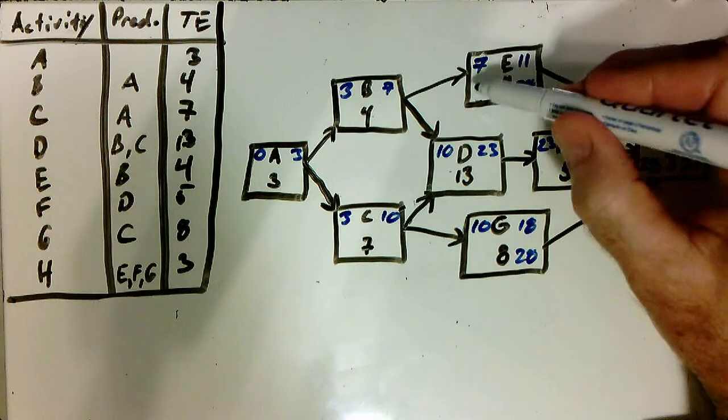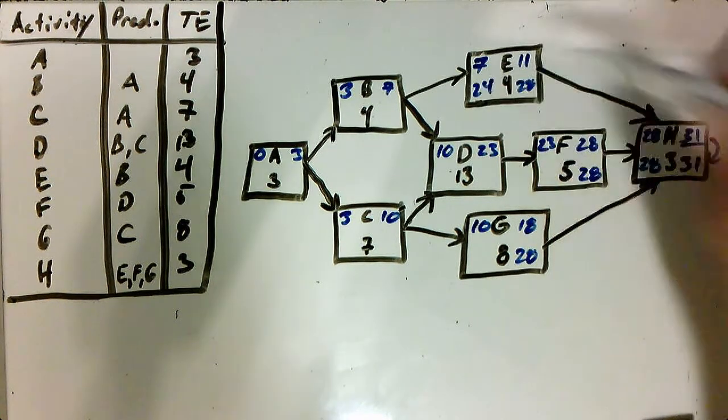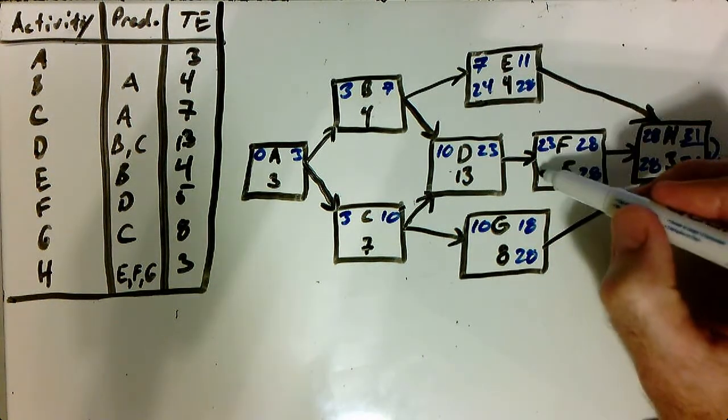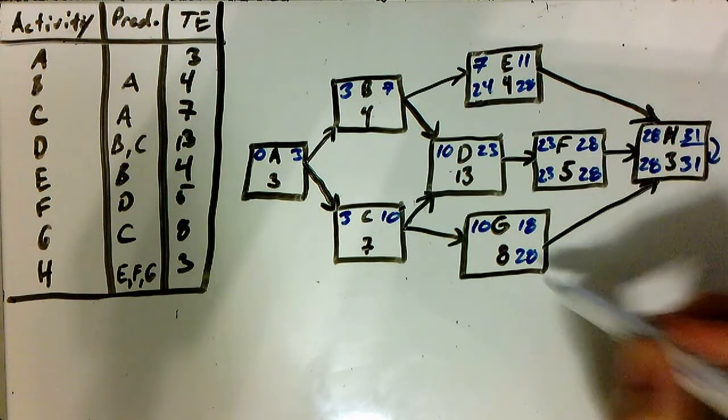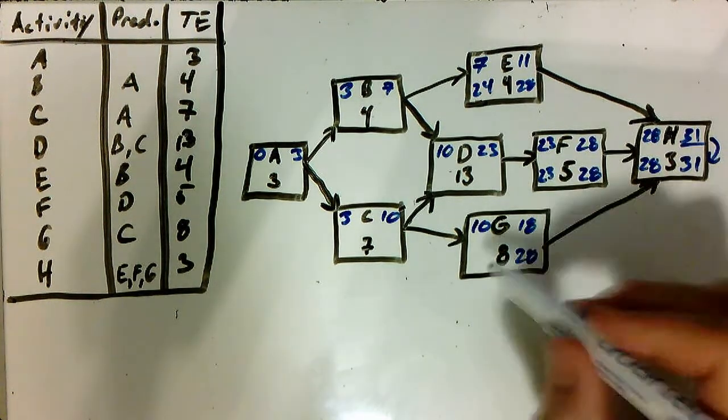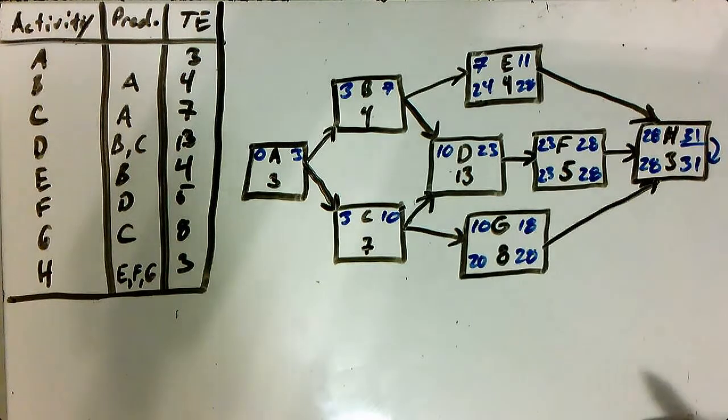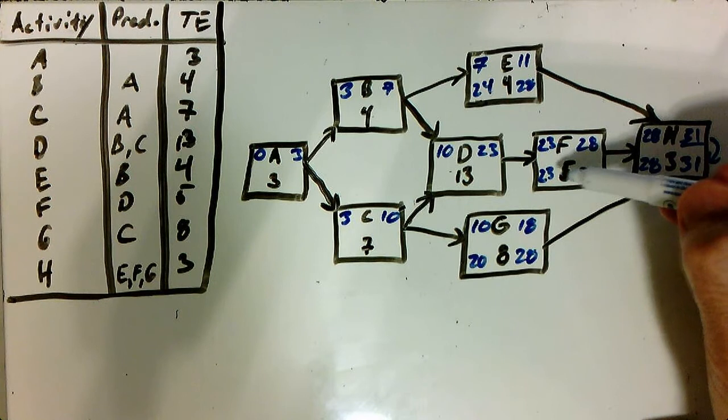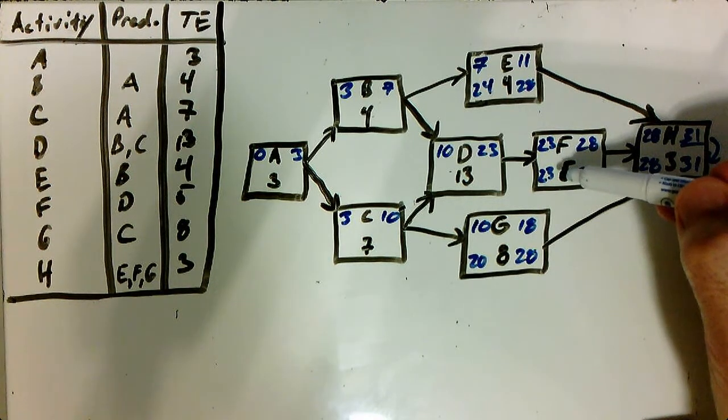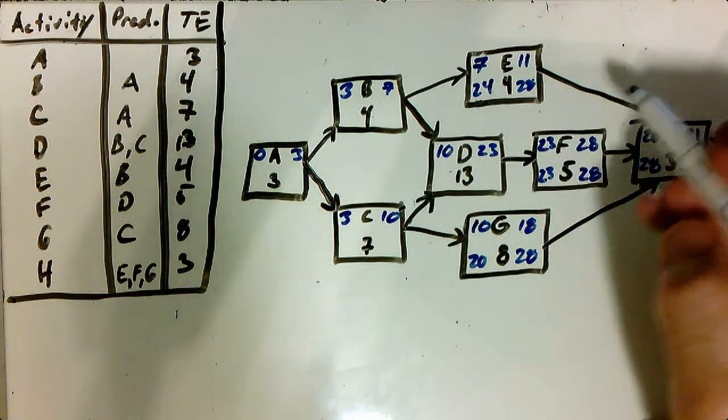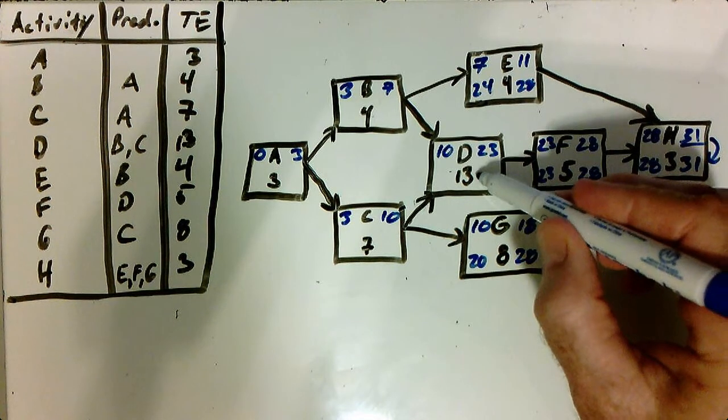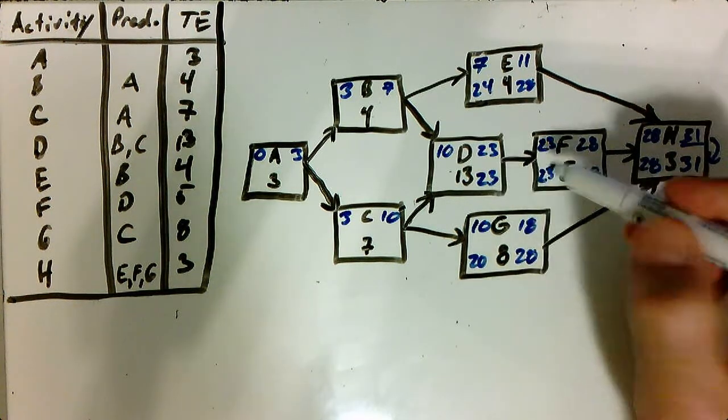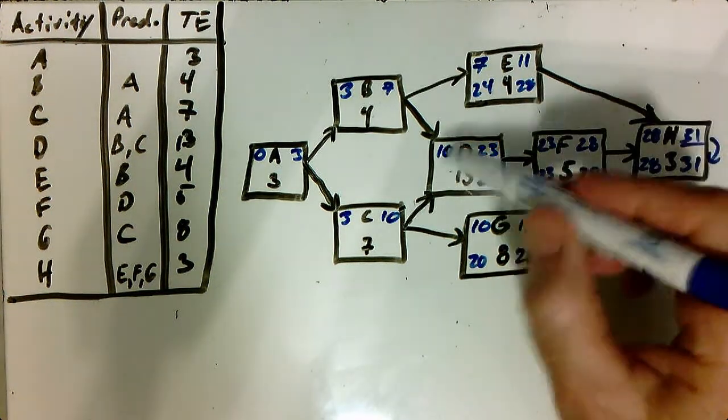Twenty-eight minus four, twenty-four. Twenty-eight minus five, twenty-three. Twenty-eight minus eight, twenty. Now we can backtrack. So the twenty-three of our late start then goes to our late finish, twenty-three. Twenty-three minus thirteen, ten.